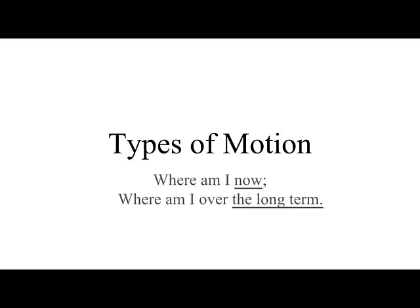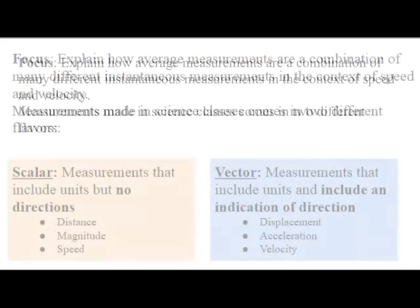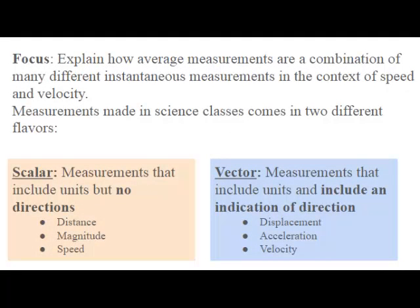Types of motion. In this lecture we're going to be discussing where am I now and where am I over the long term. By the end of this lecture I hope that you can explain how average measurements are simply a combination of many different instantaneous measurements, and be able to describe it in the context of speed or velocity and actually know what the difference is.